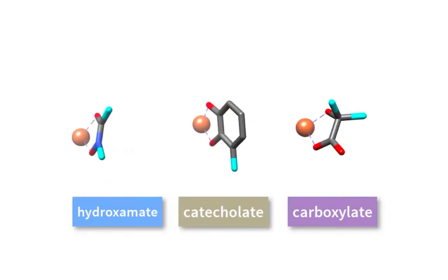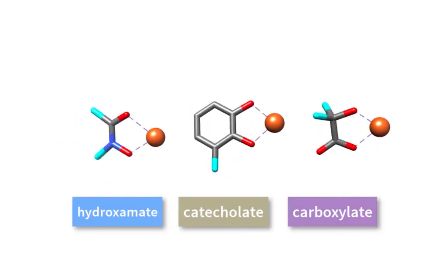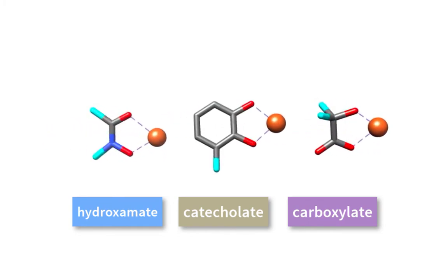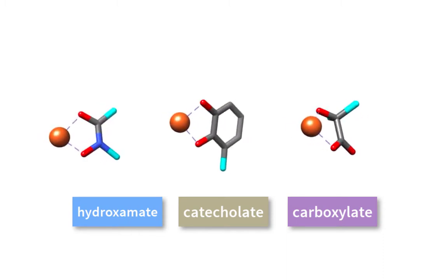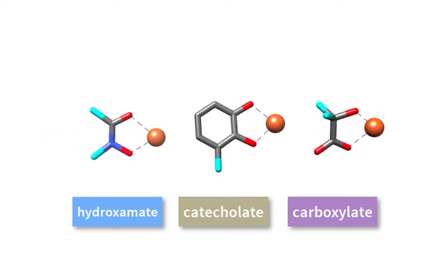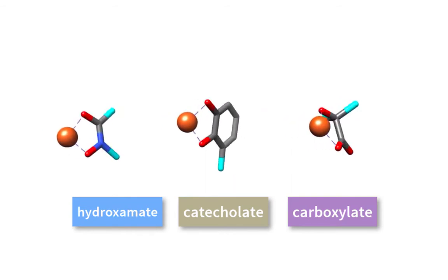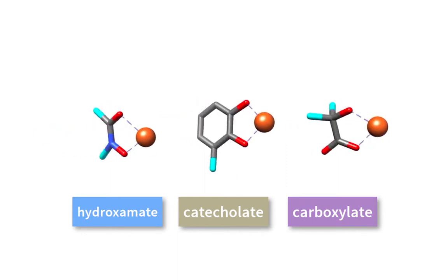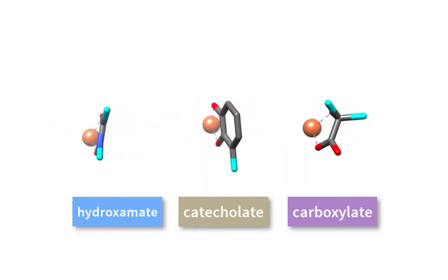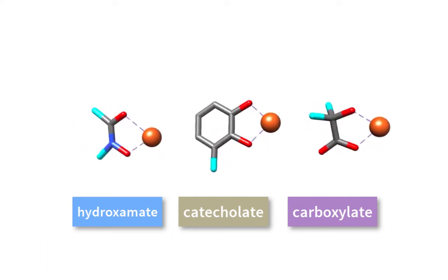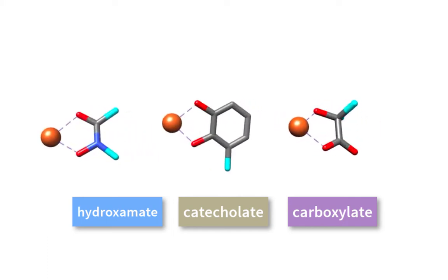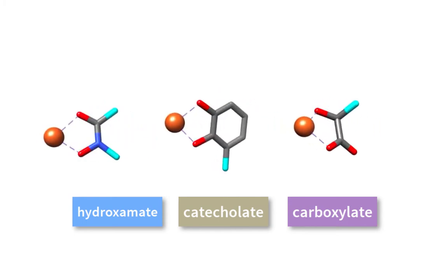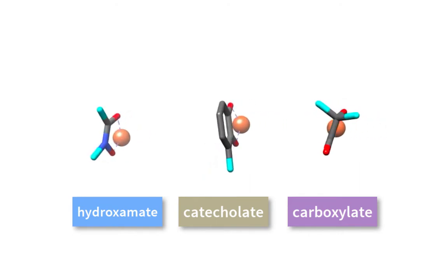These are the individual functional groups found in each of the three siderophore groups. Each of these functional groups donates two oxygen atoms, which are in most cases negatively charged. This is not a steadfast rule, as some alternatives can occur where other atoms like nitrogen or sulfur take the place of an oxygen; these alternative functional groups have decreased iron affinity. The functional groups act as bidentate ligands, but naturally occurring siderophores typically combine three of these into a hexadentate structure through the variable R groups.